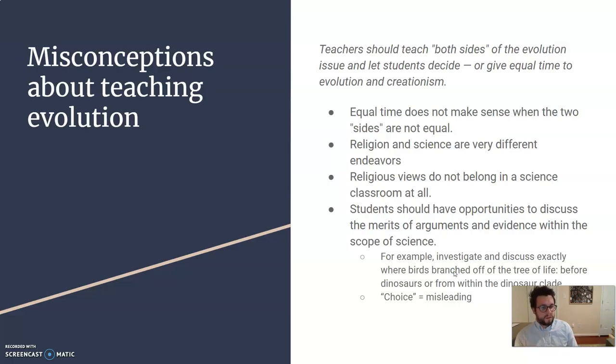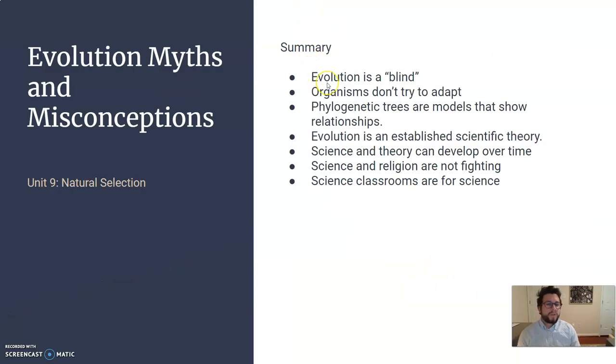So, this idea of a choice for evolution or creation. Which one do you think is right? Is really misleading. So, in summary. Evolution is blind. It's not progressing in a known direction forward. Organisms are trying to adapt. This happens randomly. And phylogenetic trees are going to be models that show relationships. They're not showing you who evolved from who necessarily. It's just showing who is more and less related. And evolution is an established scientific theory. It's not just a theory. And this theory can develop over time. And it's not religion.